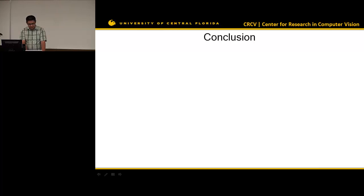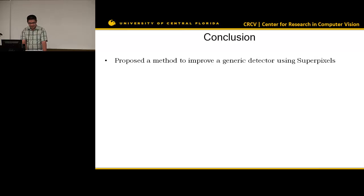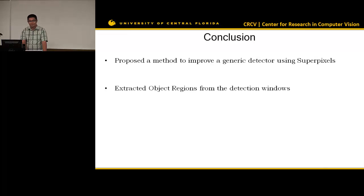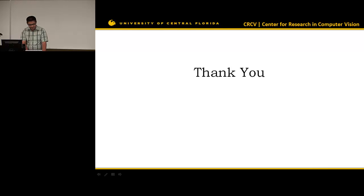To conclude, we proposed a method to improve object detection using superpixels, and we can extract object regions from the detection window. Our method improves the state-of-the-art detector by 5 to 16% in average precision. Thank you.